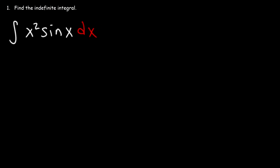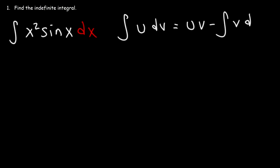This video is for those studying to take the Calculus 2 final. Let's begin with Problem 1: find the indefinite integral of x squared sine x dx. Feel free to pause and try it yourself. We need to use integration by parts, because the integral of u dv equals u times v minus the integral of v du.